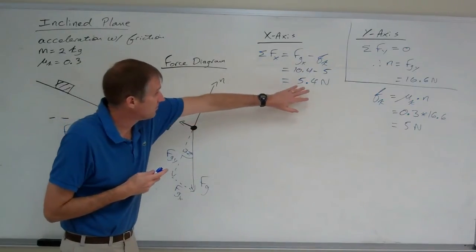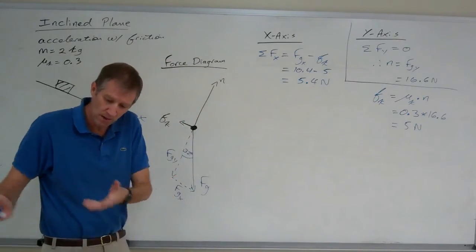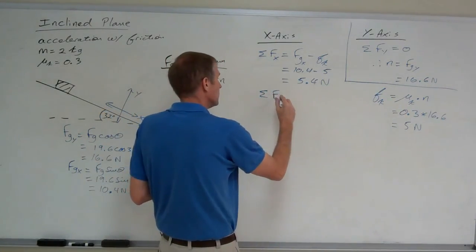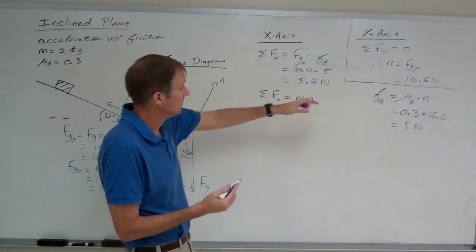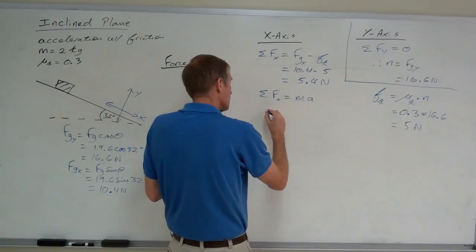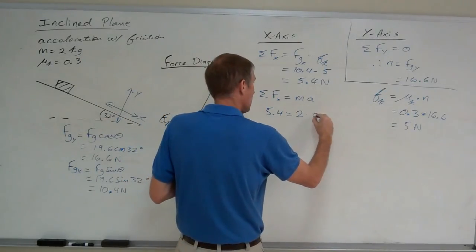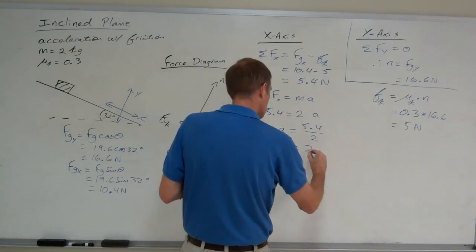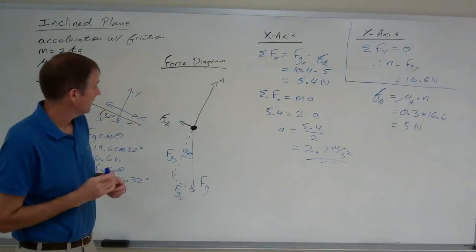So, this is the unbalanced force. 5.4 newtons of force is unbalanced. That's what causes the block to accelerate down the ramp. Newton says that net force causes the mass to accelerate. The acceleration is in the x-axis. Remember, there's nothing moving in the y-axis. It's all in the x-axis, and it's 5.4 newtons. So, 5.4 equals a mass of 2 times A. Solve for A. That's 5.4 all over 2. And that comes out to be 2.7 meters per second squared. And we're done.